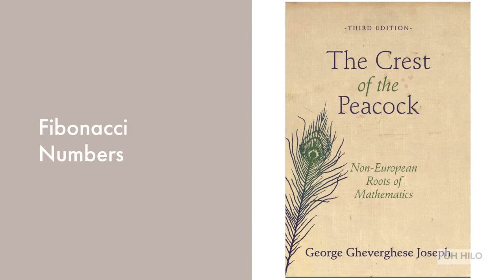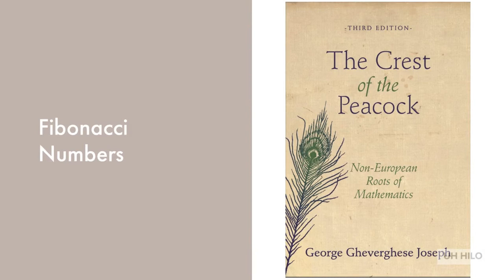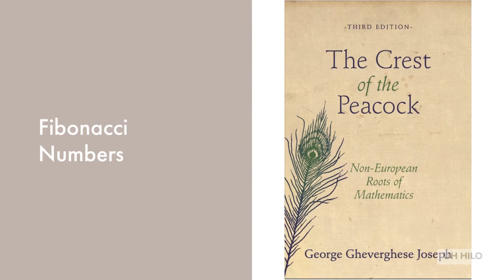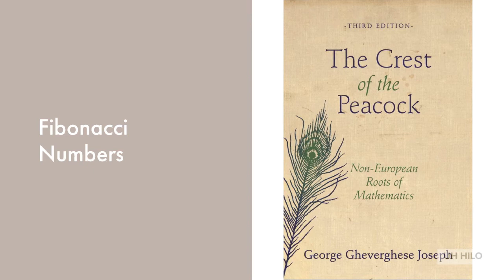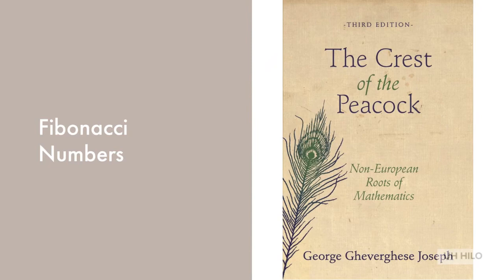Fibonacci numbers are everyone's favorite. f(0) is 0, f(1) is 1, and f(n) is equal to f(n-1) plus f(n-2), for n greater than 2. These numbers were actually discovered 1400 years prior to Fibonacci by Pingala in India, who was working on enumerating possible patterns of Sanskrit poetry from syllables of two lengths.